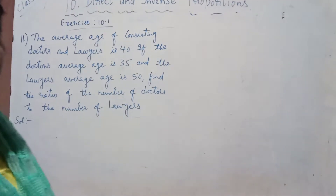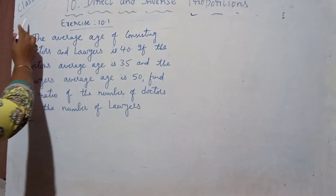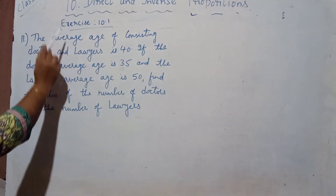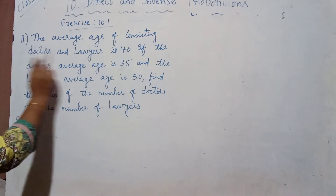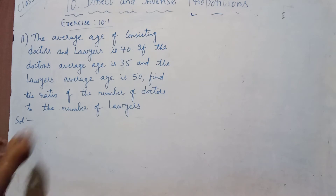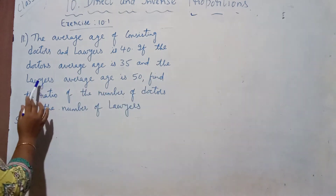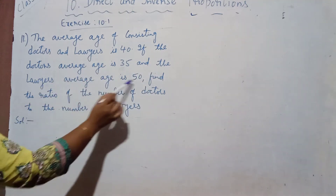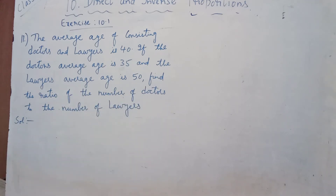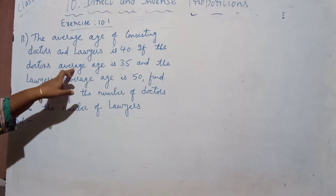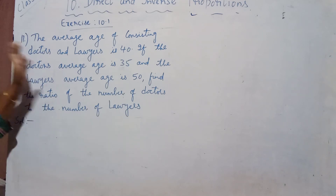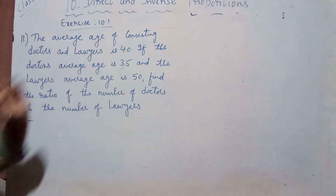Today in 8th class mathematics, in direct and inverse proportions, chapter 10, exercise 10.1, this is the 11th problem. The average age of a group consisting of doctors and lawyers is 40. The doctors' average age is 35 and the lawyers' average age is 50. Find the ratio of the number of doctors to the number of lawyers. The doctor's average age and the lawyers' average age are given, and the combined average of both doctors and lawyers is given as 40.